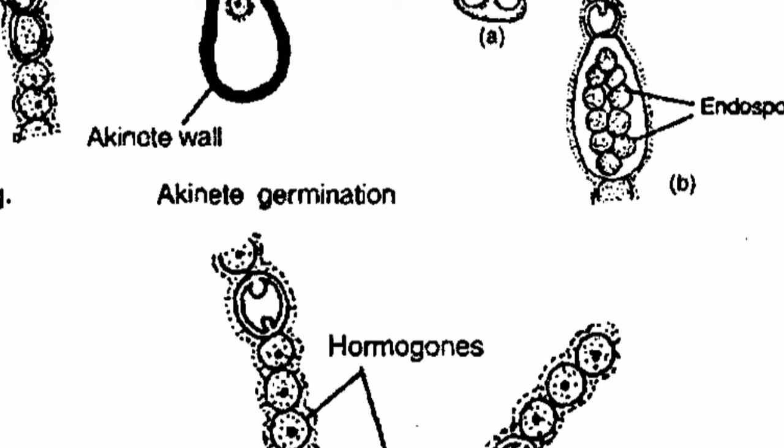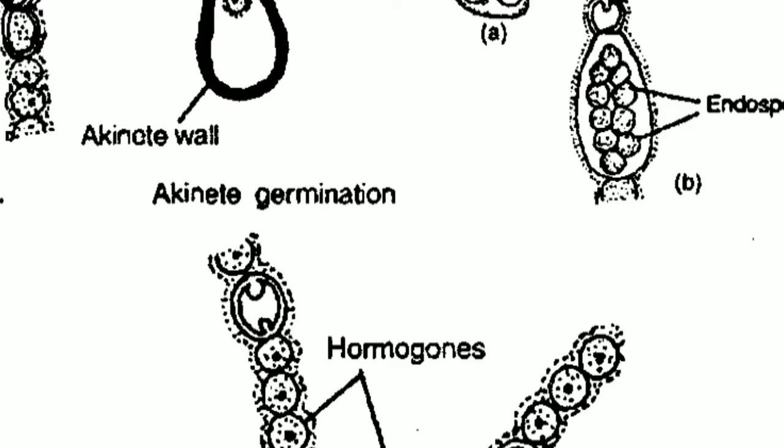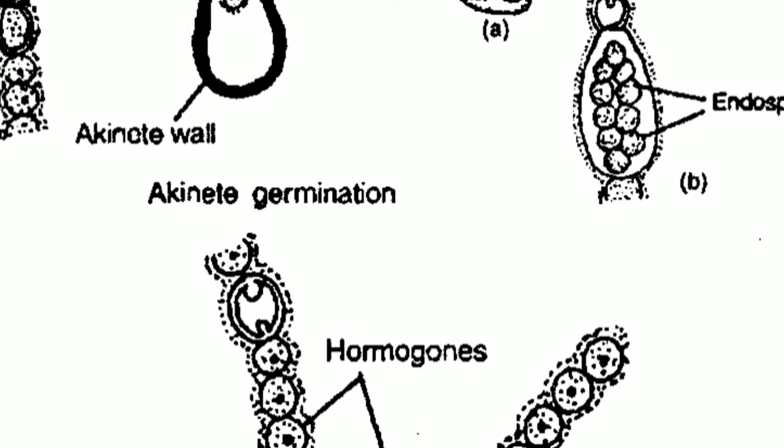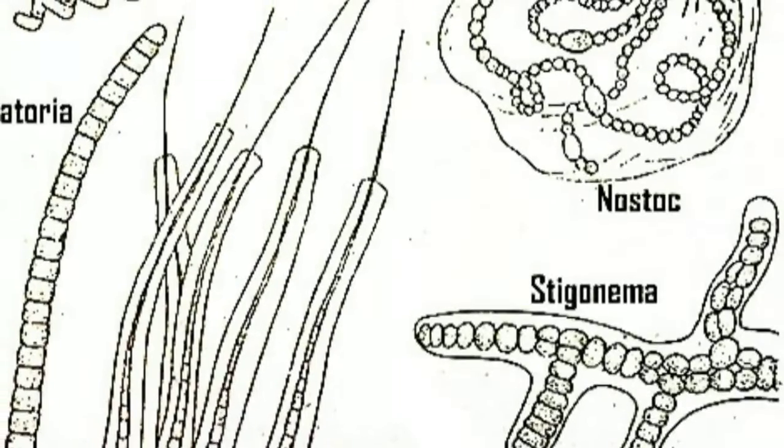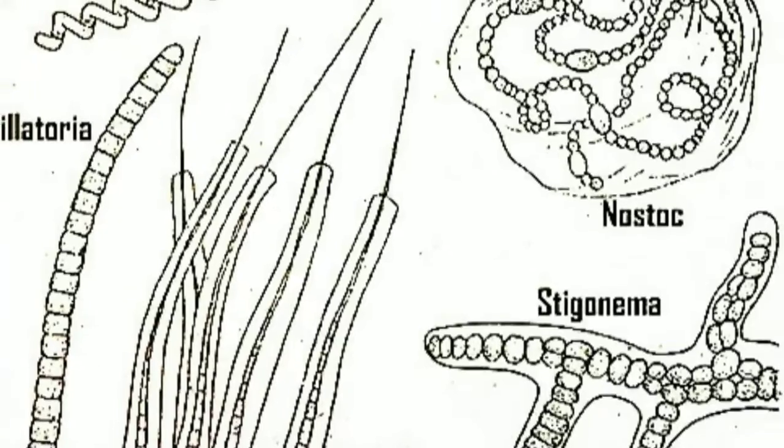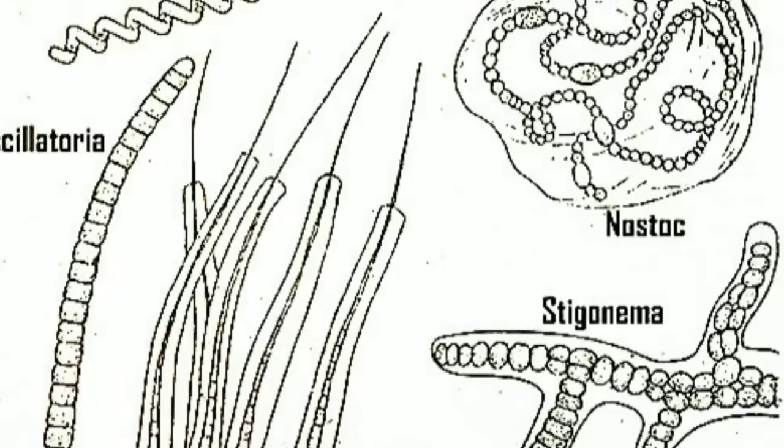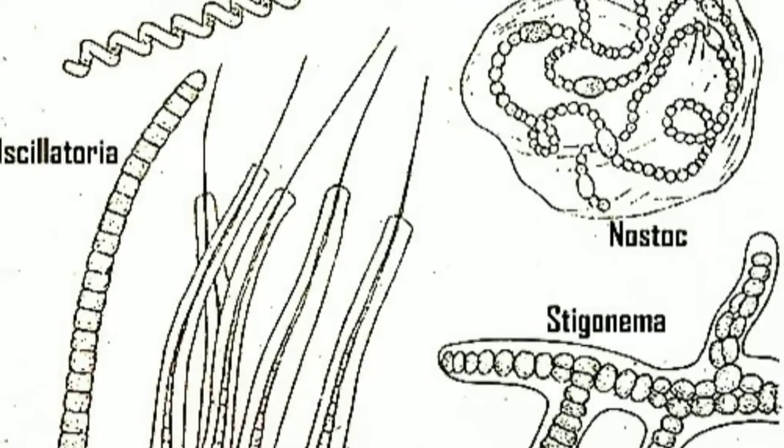Nucleoplasm is not differentiated and intrudes into peripheral chromatoplasm. This region appears like nucleus but that is not true nucleus so it is called as incipient nucleus.